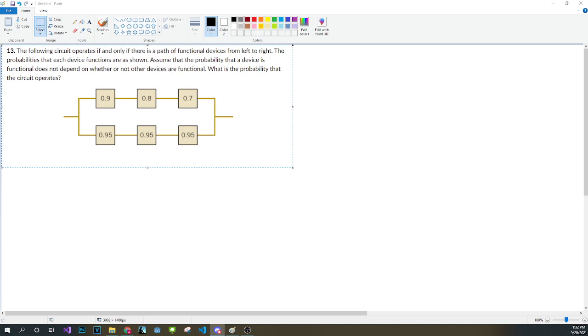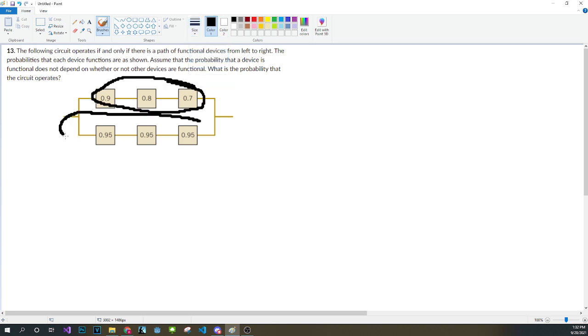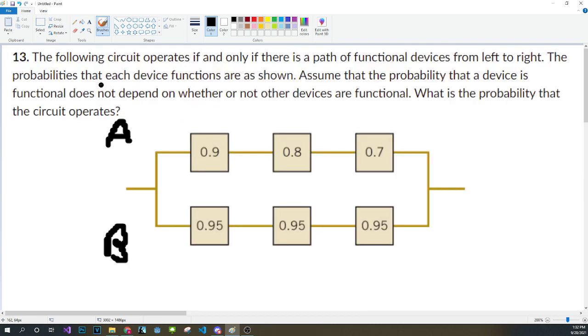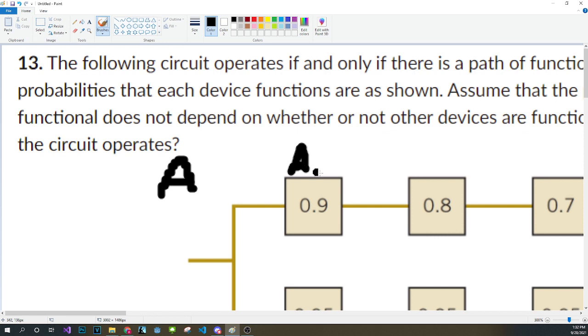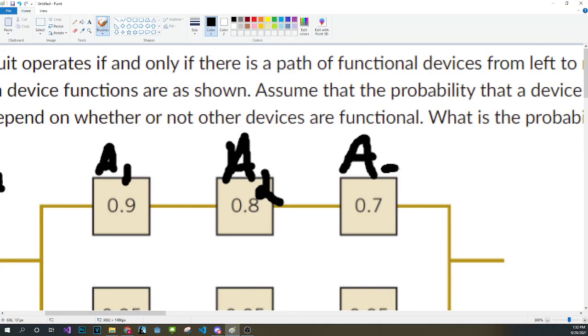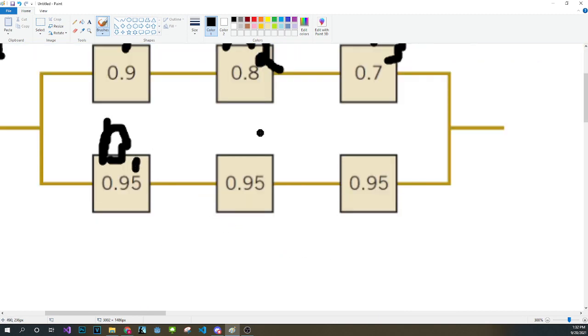So what this is asking is it wants you to find out what is the probability that the whole thing will function given that we have two series circuits. So this is a series circuit right here and this is a series circuit right there. We're going to call this series circuit A, we're going to call this series circuit B. This one is going to be, let me zoom in a little bit, A1, A2, A3. This one's going to be called B1, B2, B3.